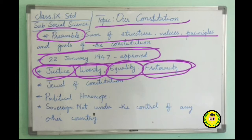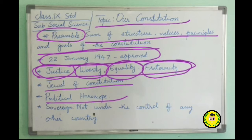The preamble to our Constitution is meaningful. It describes our political system and is the key to understanding our Constitution. It has been described as the 'jewel of the Constitution' by K.M. Munshi, and is also referred to as the 'political horoscope' of the Constitution.